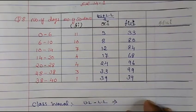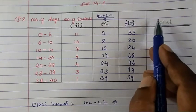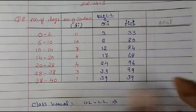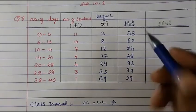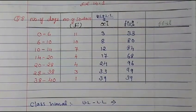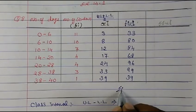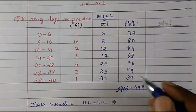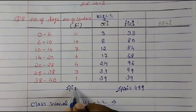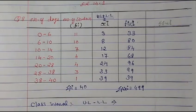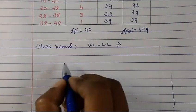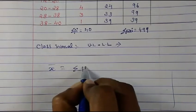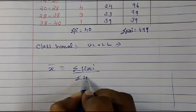If you wanted to use the assumed mean method you would find di = xi − A. But the direct method is fine here. Now we sum up: Σ(fi × xi) = 499, and Σfi = 40. Putting it in the formula: x̄ = Σ(fi·xi) / Σfi = 499 / 40.